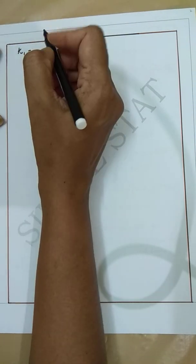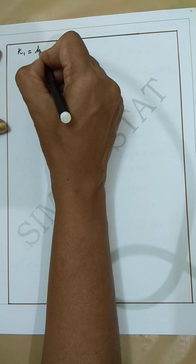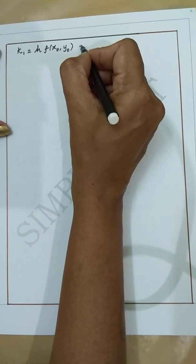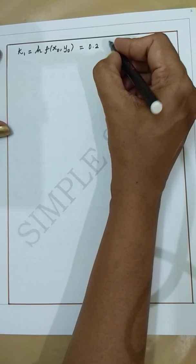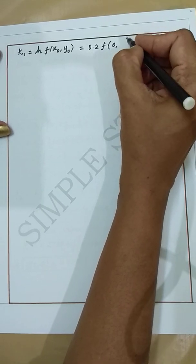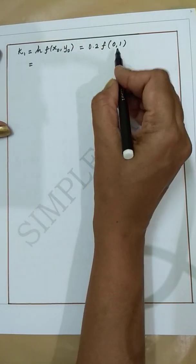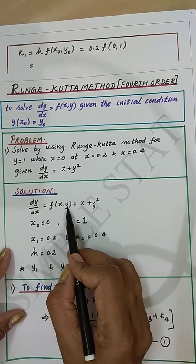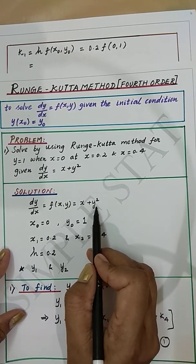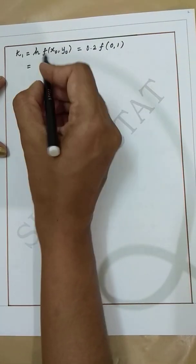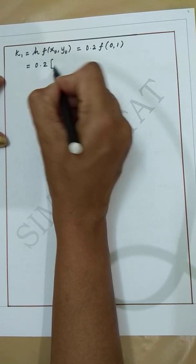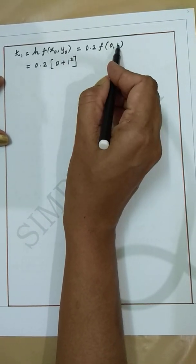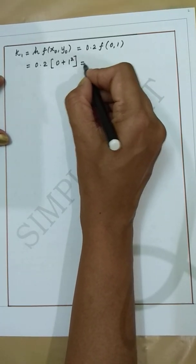k1 is given by k1 = h · f(x0, y0). We know that h = 0.2, x0 = 0, and y0 = 1. Substituting x = 0 and y = 1 in the differential equation f(x, y) = x + y², we get k1 = 0.2 × (0 + 1²) = 0.2.